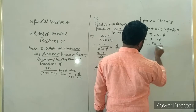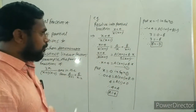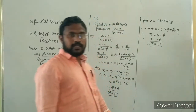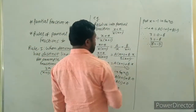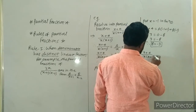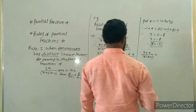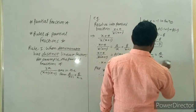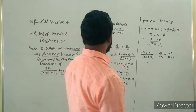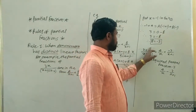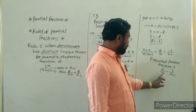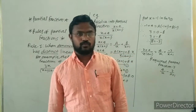Therefore B is equal to minus 3. So A equals 4 and B equals minus 3. We have found the values of A and B. The partial fraction of (x+4) upon x(x+1) is equal to 4 upon x plus minus 3 upon (x+1). The required partial fraction is 4 upon x minus 3 upon (x+1).